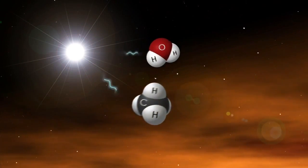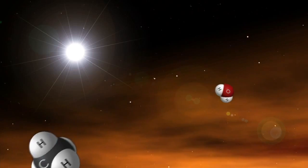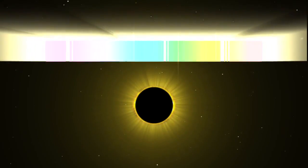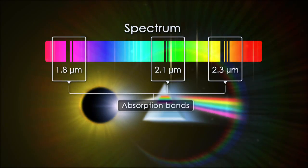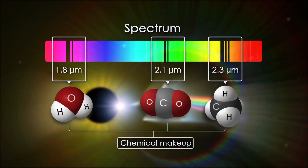Because each molecule absorbs distinct wavelengths, astronomers spread the star's light into its spectrum of colors to see which wavelengths have been absorbed. The dark absorption bands act as molecular fingerprints, revealing the atmosphere's chemical makeup.